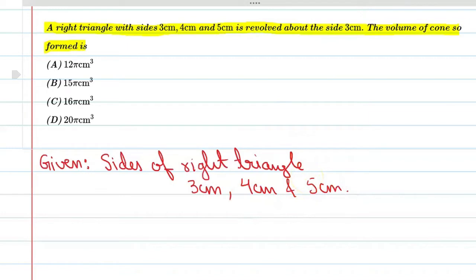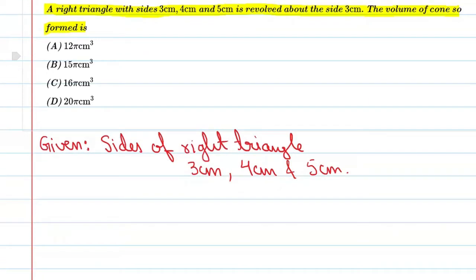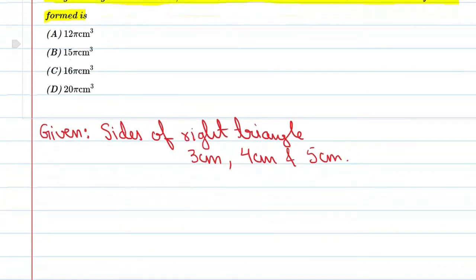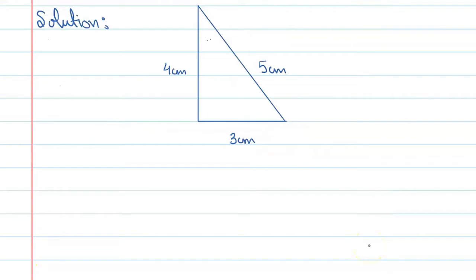For clarity we will take a figure and see how it works. So students you can see that this figure is a right angle triangle. One side is 3 cm, this side is 5 cm and this side is 4 cm. Now question is saying that we have revolved this side of the cone, so this will be revolved.